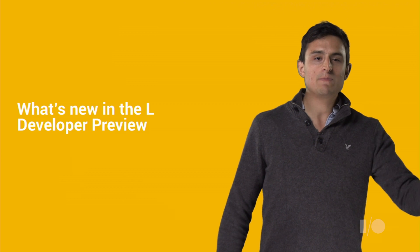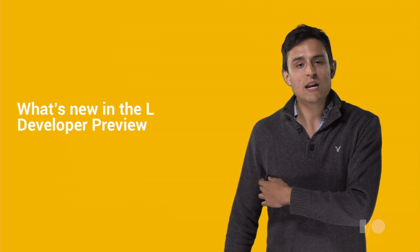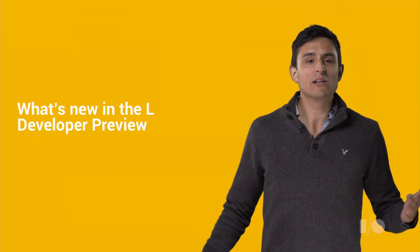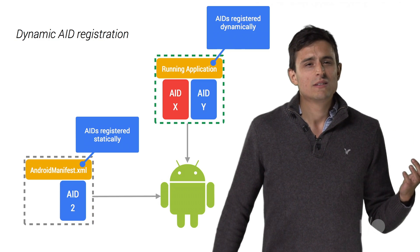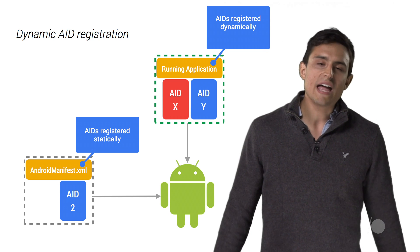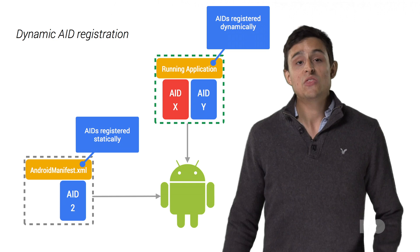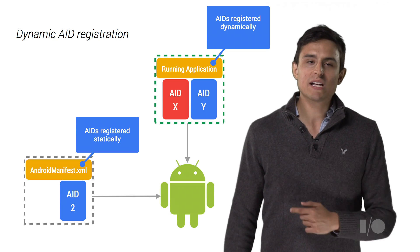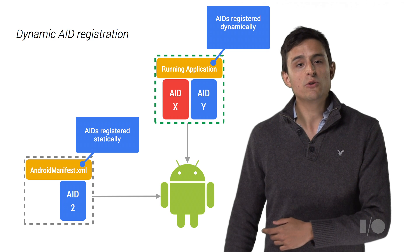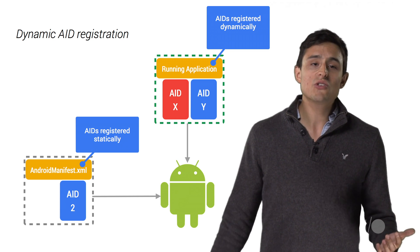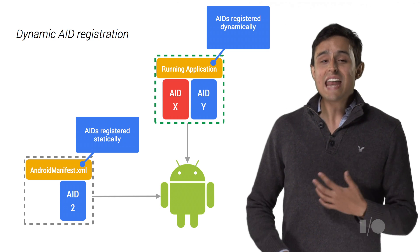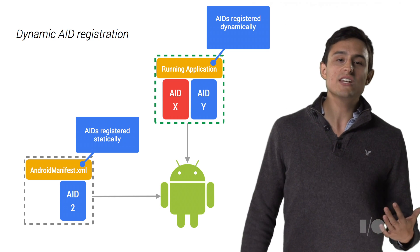Based on your feedback, we've expanded HCE capabilities to open it up for more use cases, easier integration, and broader availability in the L Developer Preview. Lots of early HCE developers noted that they didn't know their AID list at compile time — they wanted a way to register them dynamically depending on the state of their application. Starting with the L Developer Preview, applications need not register their AIDs statically in the manifest. Now, applications can dynamically register for AIDs they're interested in at runtime.